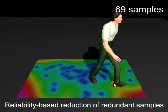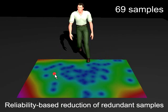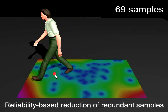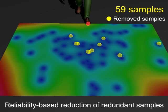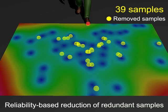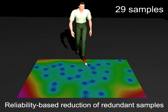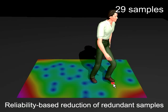This shows the usefulness of prediction reliability. Motion samples are gradually reduced from 69 to 29 using cross-validation. The accuracy of the foot positions is maintained even after reducing samples.